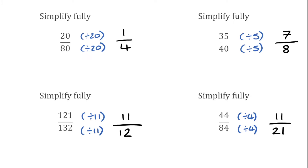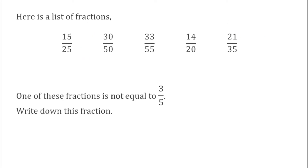Well done if you followed along with those. We're now going to have a look at some problem solving questions. For this next question we've got a list of fractions, and it says one of the fractions is not equal to 3 over 5 — write down this fraction. All we want to do is take that list of fractions and simplify them. Because 3 fifths is in its simplest form, four of these fractions should simplify to 3 over 5, leaving us with the one remaining one that doesn't.